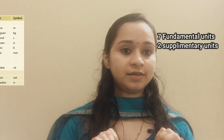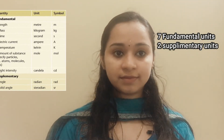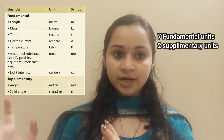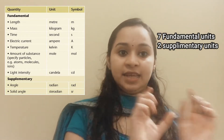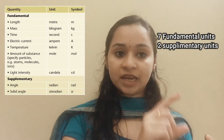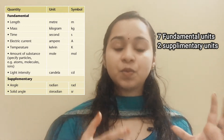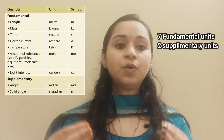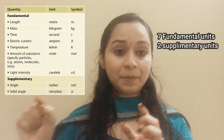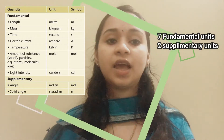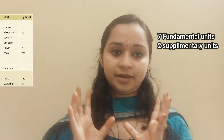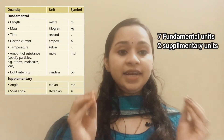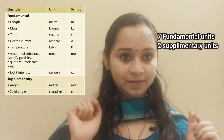Fourth: Temperature — Kelvin is the unit, named after a scientist, so the symbol is capital K. Fifth: Electric current — the unit of current is ampere, and the symbol is capital A.